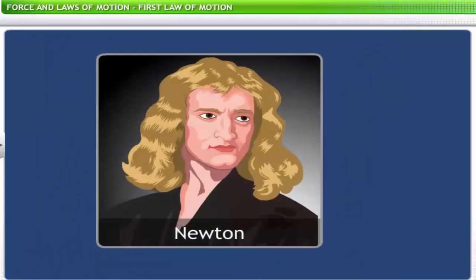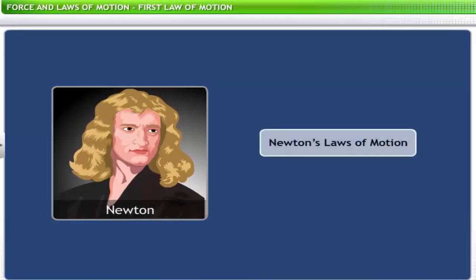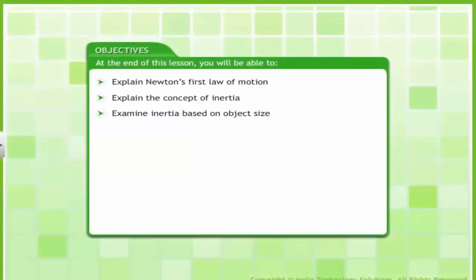Sir Isaac Newton further studied Galileo's ideas on force and motion and presented three fundamental laws that govern the motion of objects — these are known as Newton's laws of motion. In this lesson you will learn about Newton's first law of motion and inertia. At the end of this lesson you will be able to explain Newton's first law, explain the concept of inertia, and examine inertia based on object size.